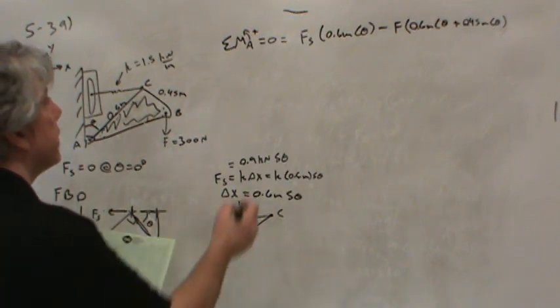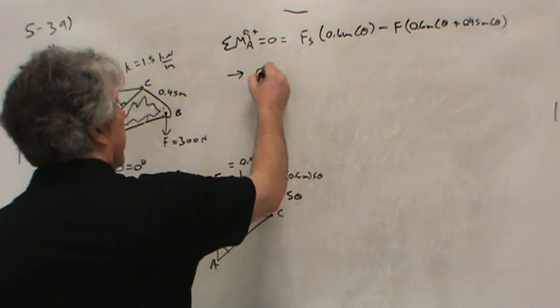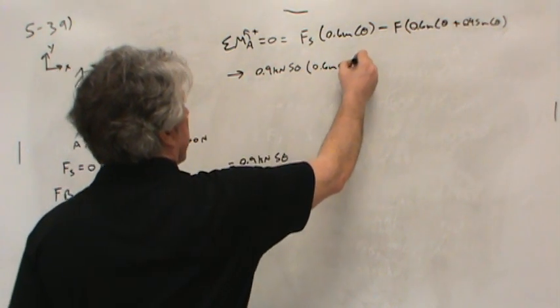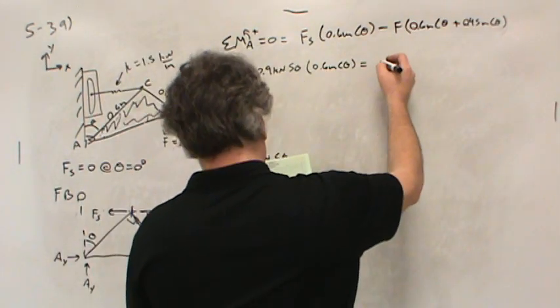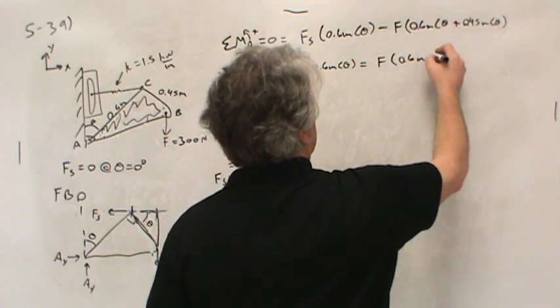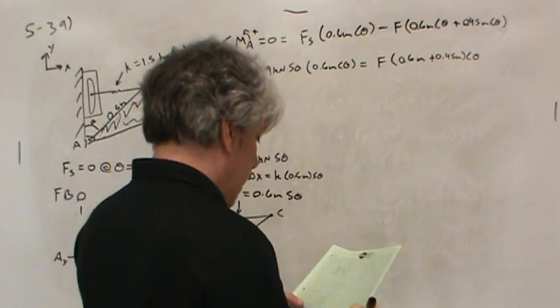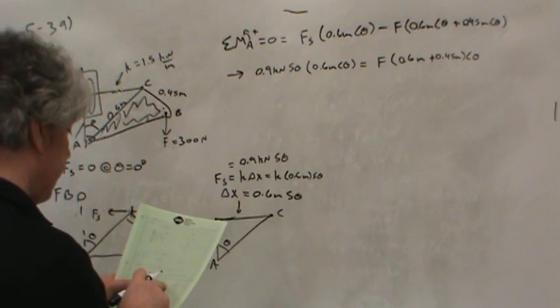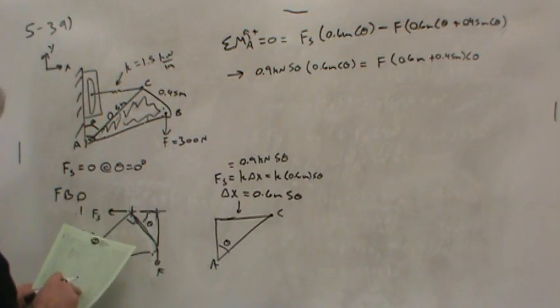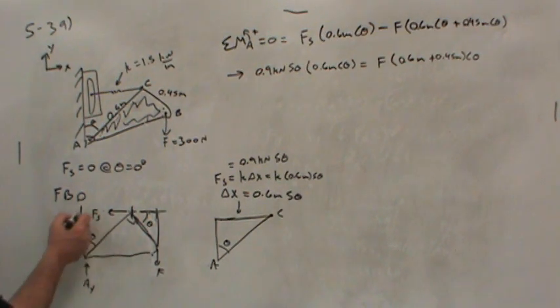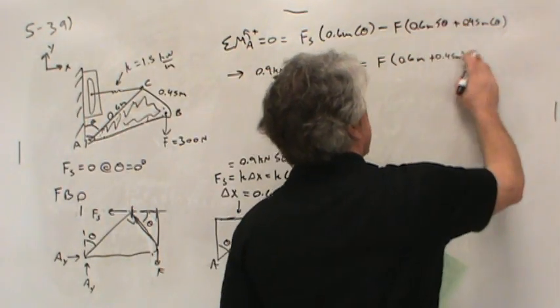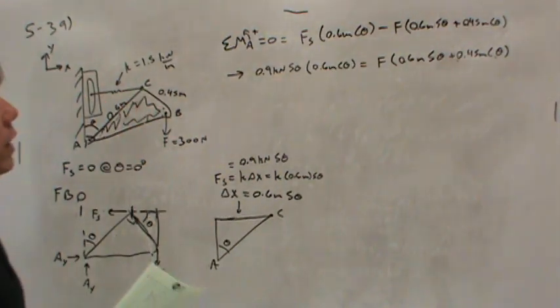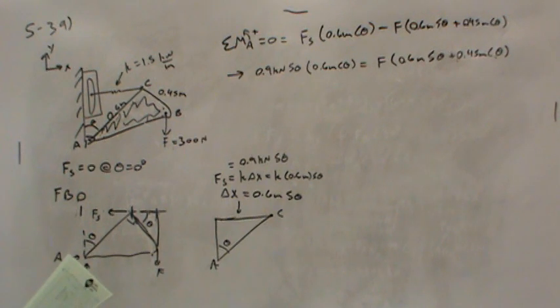Now, let's replace Fs with the equation that I have, 0.9 sine theta, multiplied by 0.6 meters cosine theta. And let's put this term on the other side. So equals F times 0.6 meters plus 0.45 meters cosine theta. Let's see, did I make a mistake? Yeah, I used cosine. And I should have used sine because this length is not the cosine side. I should have used sine. Sorry about that. So that means I can't factor this out. I hate just writing down everything from my notes. I like to think through it as I go.